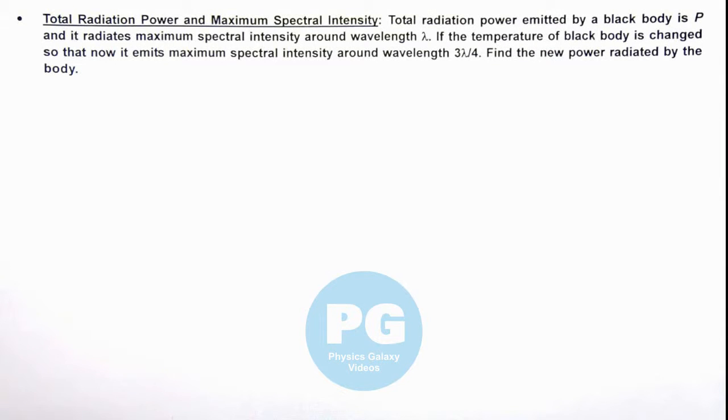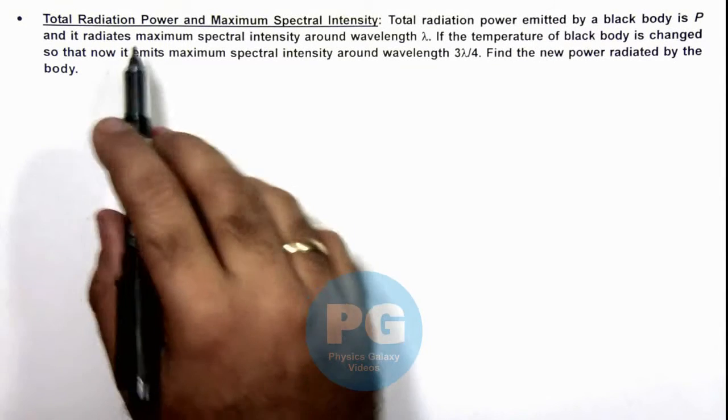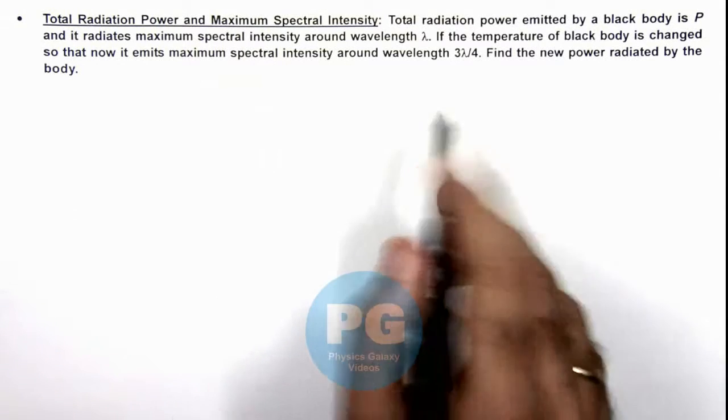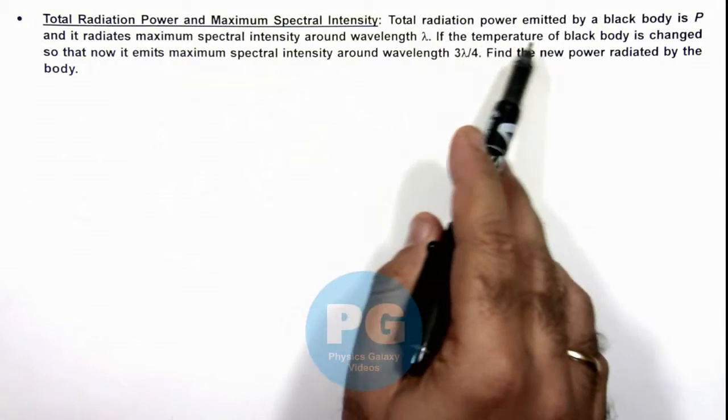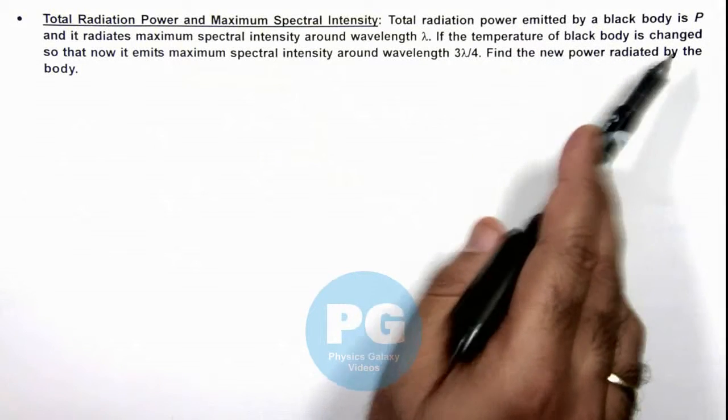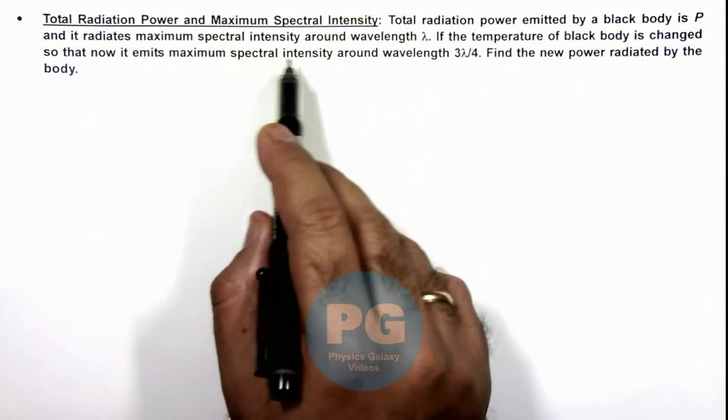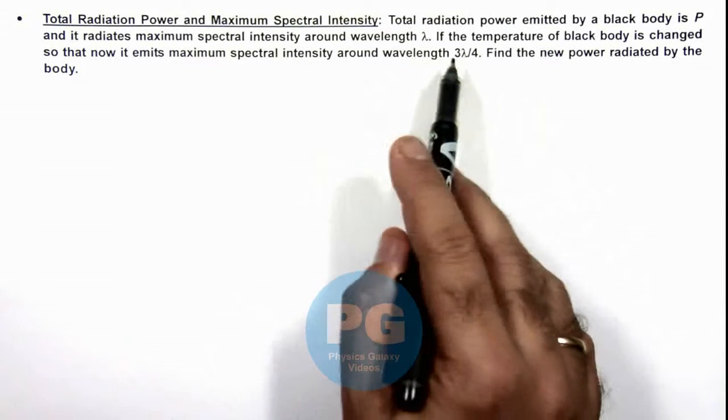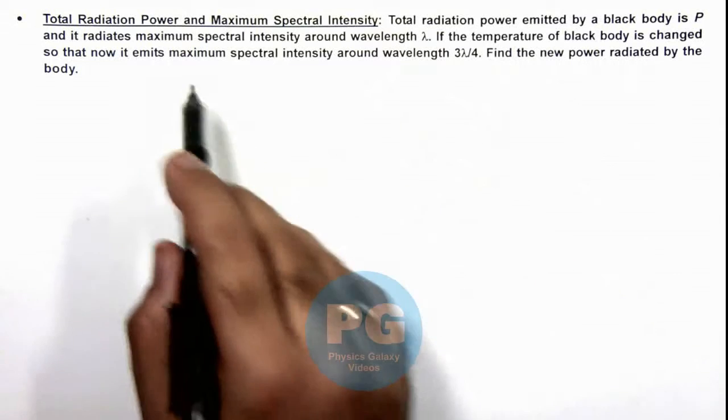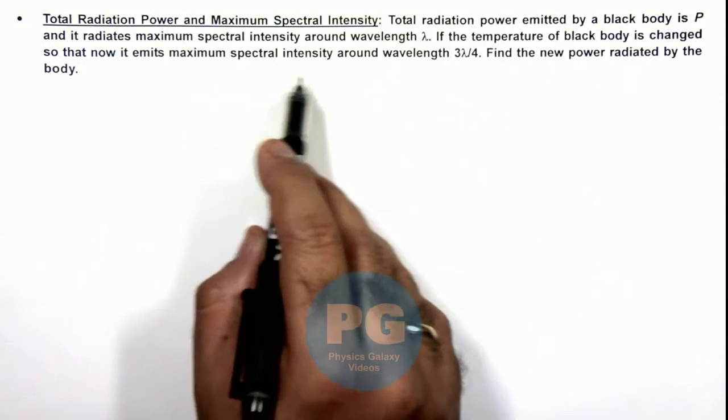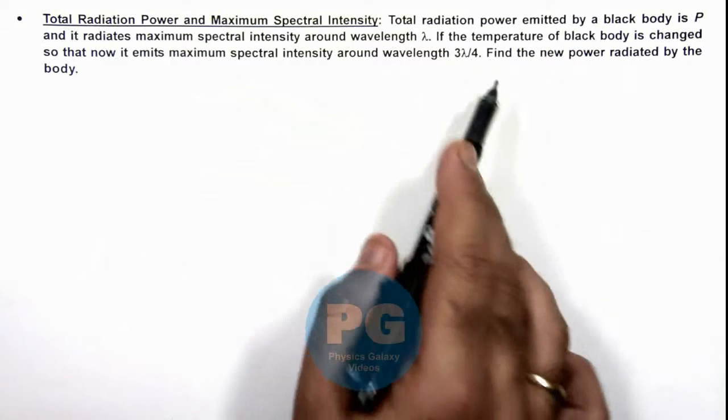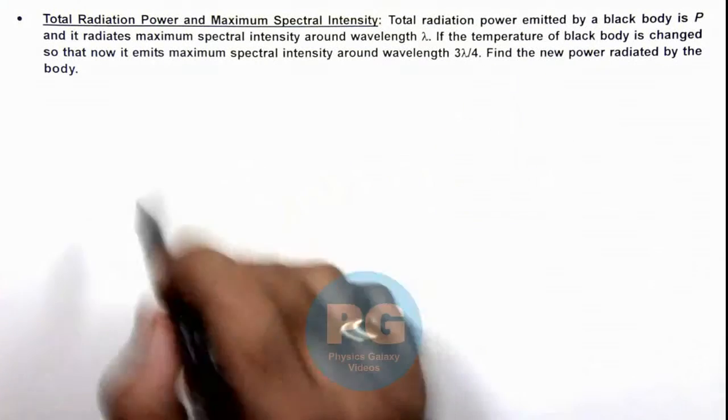In this illustration, we'll analyze the total radiation power and maximum spectral intensity from a black body. We are given the total radiation power emitted by a black body is P, and it radiates maximum spectral intensity around wavelength λ. If the temperature of the black body is changed so that now it emits maximum spectral intensity around wavelength 3λ/4, find the new power radiated by the body.